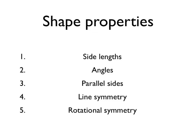There are five different ways to describe a shape's properties: the side lengths, the angles, the parallel sides, the line symmetry, and the rotational symmetry.